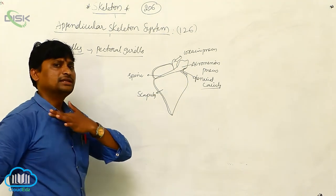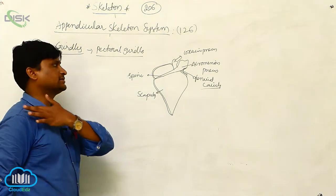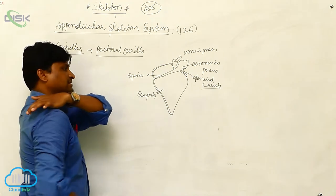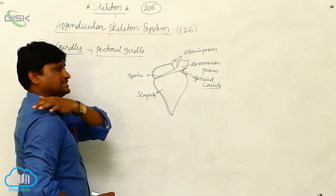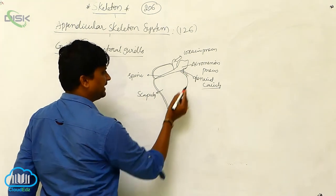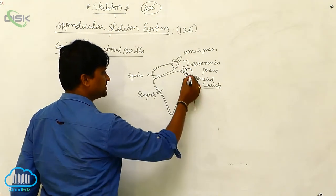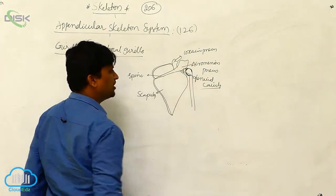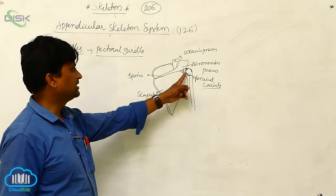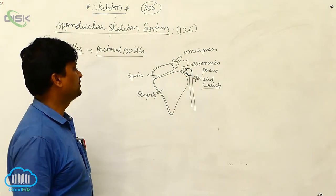The coracoid process can attach to the collar bone in the front. The collar bone is attached to the sternal area. The pectoral girdle gives a small cavity called the glenoid cavity. The ball of the humerus is lodged into the glenoid cavity, forming a ball and socket joint, permitting rotation up to 180 degrees.